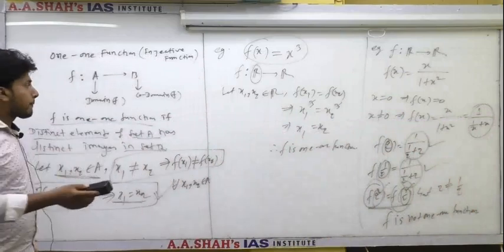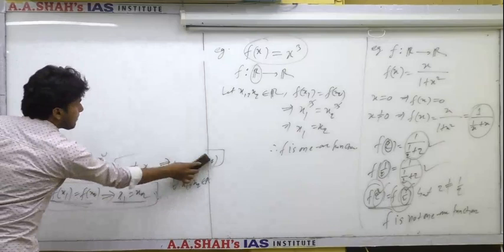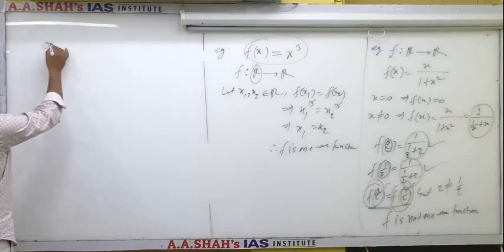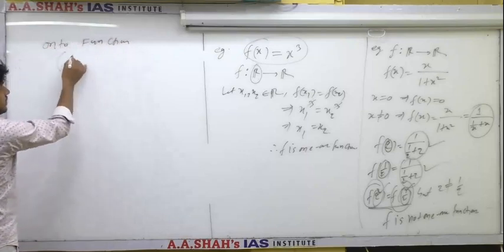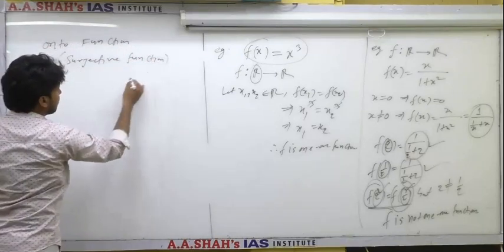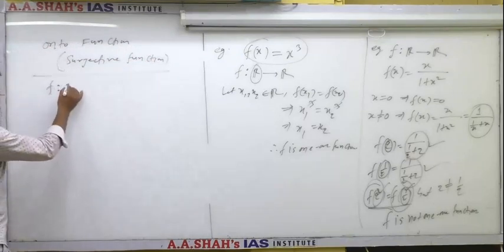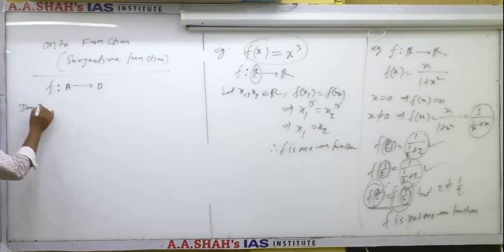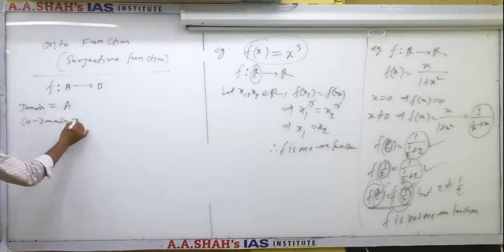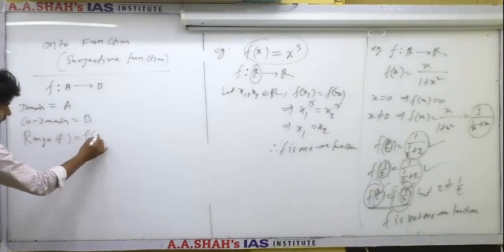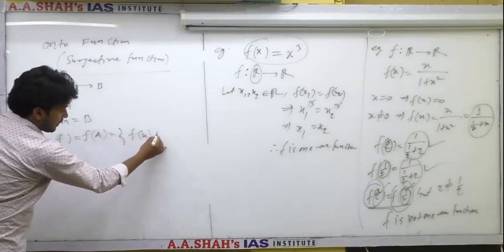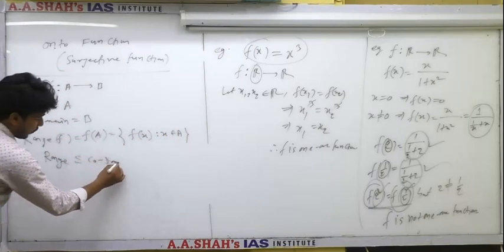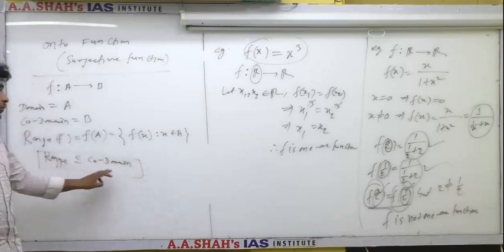Now we will discuss onto function, whose other name is surjective function. If f is a function from set A to set B, then A is the domain and B is the co-domain of f. The range of f, written f(A), is the set of all f(x) such that x belongs to A. In general, the range is a subset of the co-domain for any function.